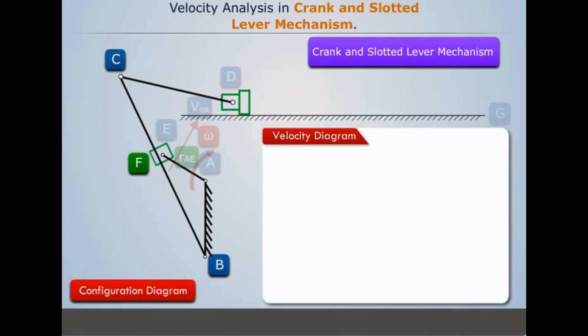In the configuration diagram, we see that points A, B and G are fixed. So to represent them, we mark a point on the velocity diagram and label them as lowercase ABG.